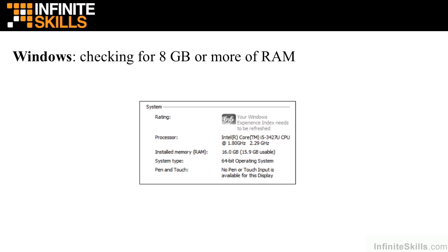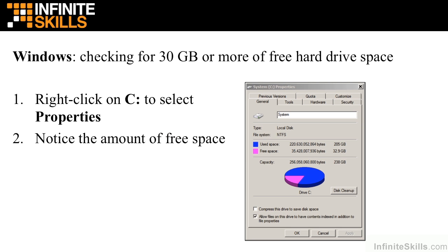Next, we want to make sure we have at least 8 gigabytes of memory on our Windows computer. Also under right-clicking My Computer and selecting Properties, we can see that under Installed Memory (RAM) we have 16 gigabytes — that's plenty. Next, we want to check for at least 30 gigabytes of free hard drive space by right-clicking on C and selecting Properties. In this case, it tells me there's 32.9 gigabytes of free hard drive space.